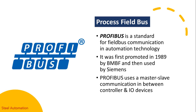It was first promoted in 1989 by BMBF, the German Department of Education and Research, and then used by Siemens. At present, above 11.5 million Profibus-based devices are used in process automation systems.